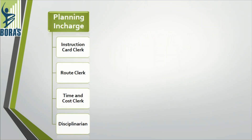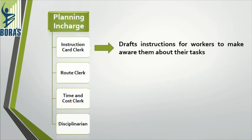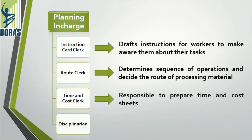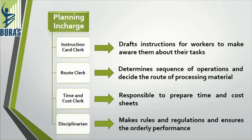Out of the eight specialists, four are assigned planning work. These are: instruction card clerk, route clerk, time and cost clerk, and disciplinarian. The instruction card clerk drafts instructions for workers and explains their tasks to them. The route clerk determines the sequence of work and decides how material will be processed. The time and cost clerk prepares time and cost sheets. The disciplinarian creates rules and regulations and ensures they are being followed.